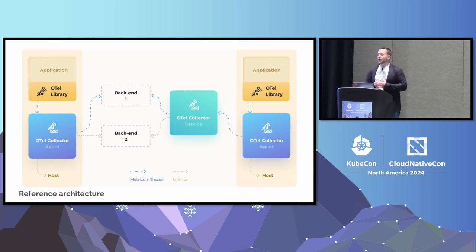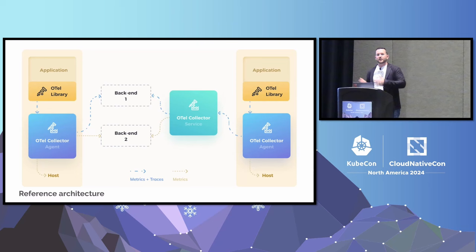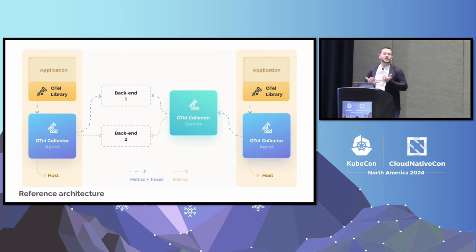Both agent and gateway modes can send data wherever you want. You don't have to use both — you can choose either one, and everything in OpenTelemetry is optional, so you can also choose not to use the collector at all. The application's OTEL library can send directly to a backend if that solves your business needs. Personally, I think the collector is a great component because it offloads responsibilities and gets you into a vendor-agnostic state faster. You don't even have to change your application instrumentation — if it's a format the collector can receive, it handles all translations. You can receive in Prometheus format and export in OTLP.